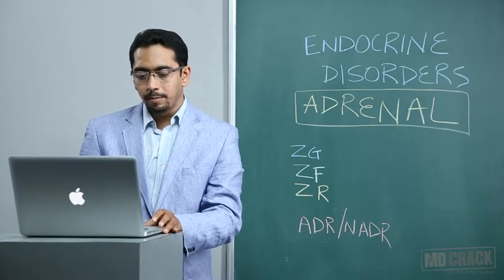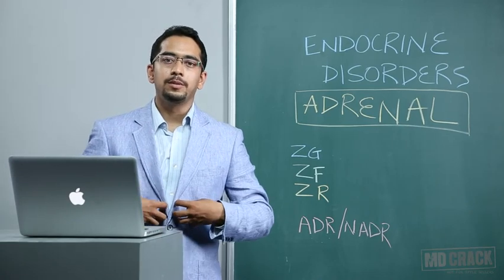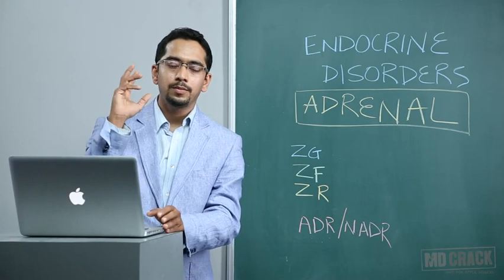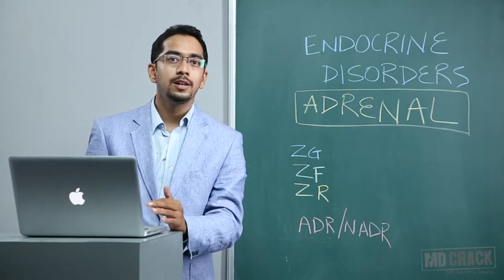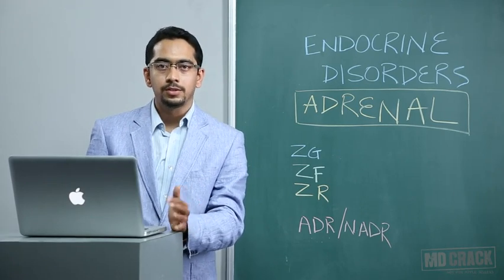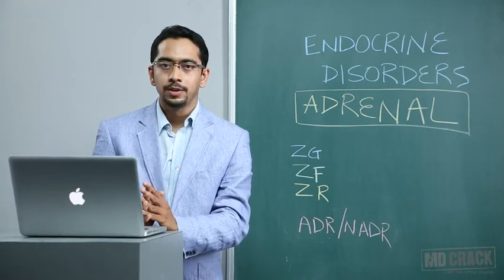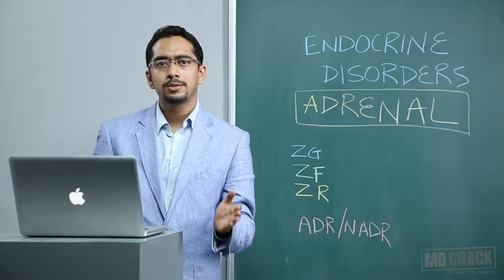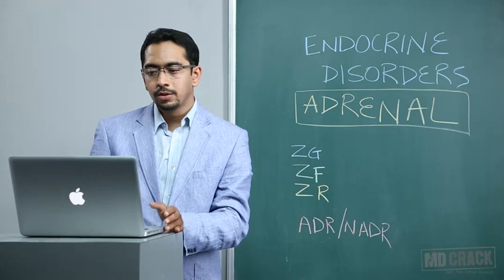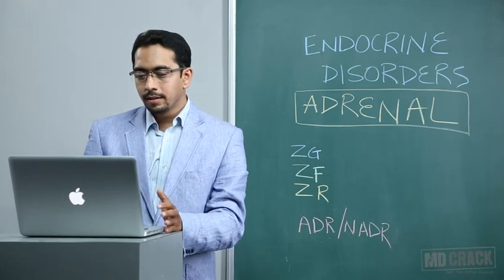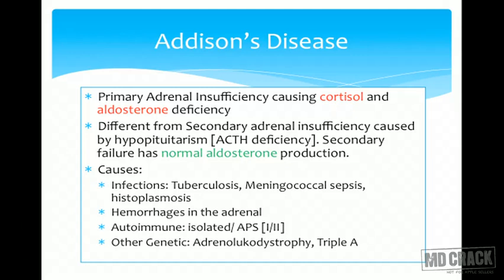Nelson's syndrome is seen in bilateral adrenalectomy where the adrenals have been removed and the pituitary produces excess ACTH if steroid replacement has not been given. Addison's disease is exactly opposite to Cushing's syndrome — here we have hypoproduction of cortisol and associated hypoproduction of mineralocorticoid. It differs from secondary adrenal insufficiency, where ACTH deficiency causes cortisol deficiency but mineralocorticoid, which comes under the renin-angiotensin mechanism, remains normal.